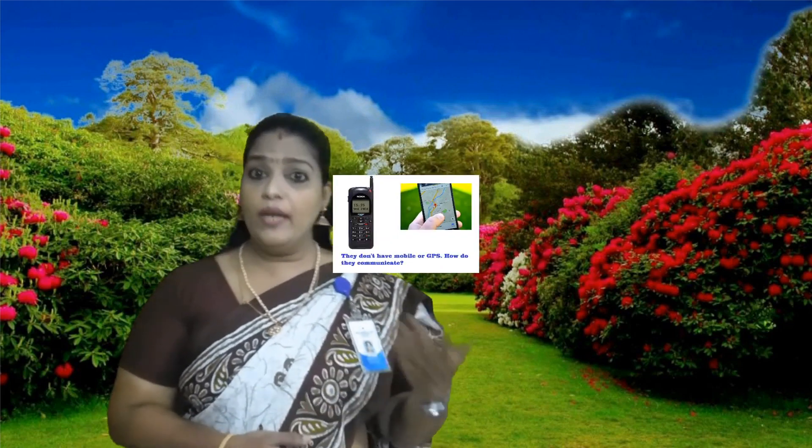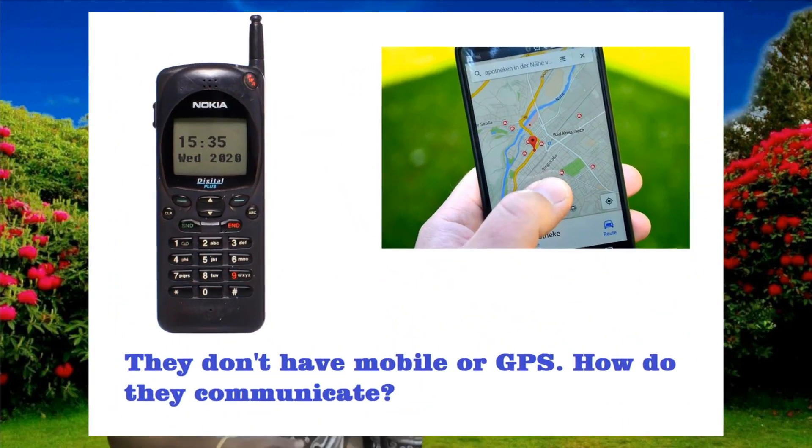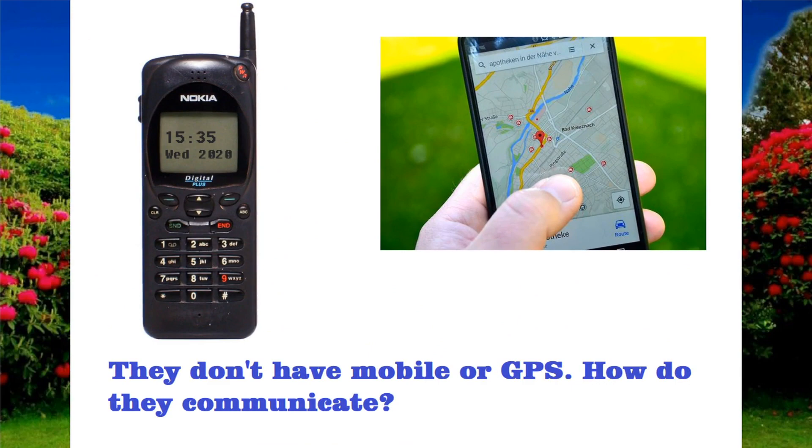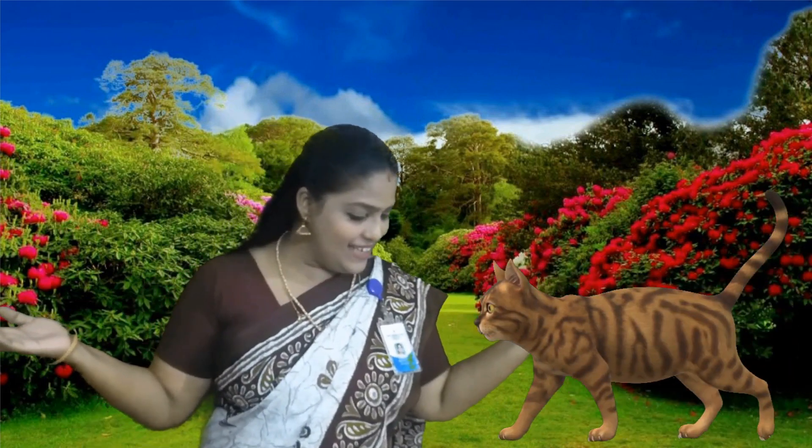They don't have any ears or mouth to communicate. They don't even have any mobiles or GPS for communication. But how is it possible? Even without all these modern devices, they are very smart in leading a very active social life. Hey, there's a guest — see what a lovely cat.